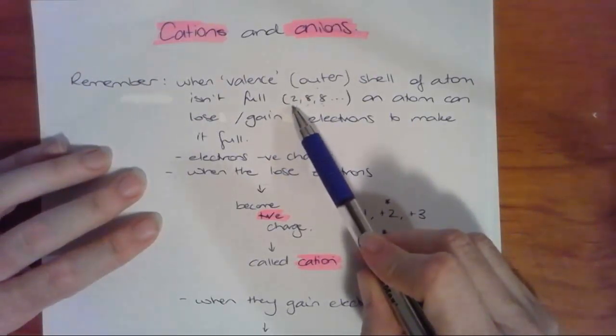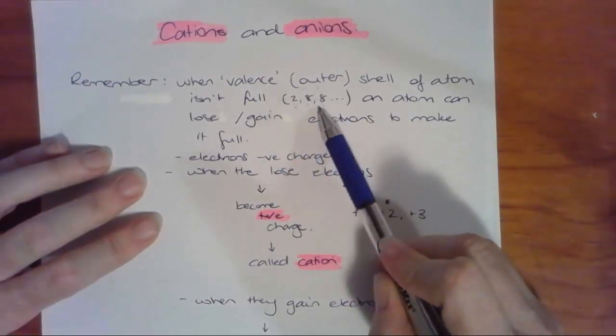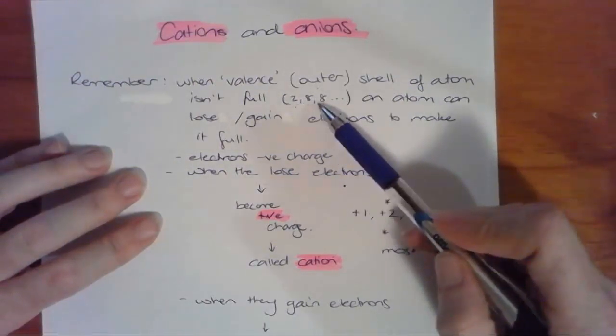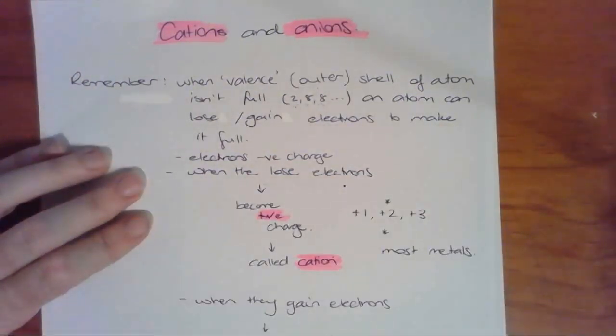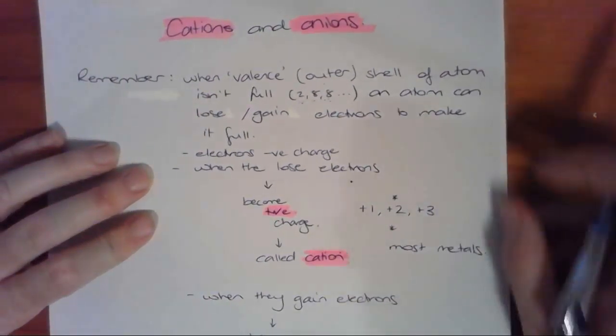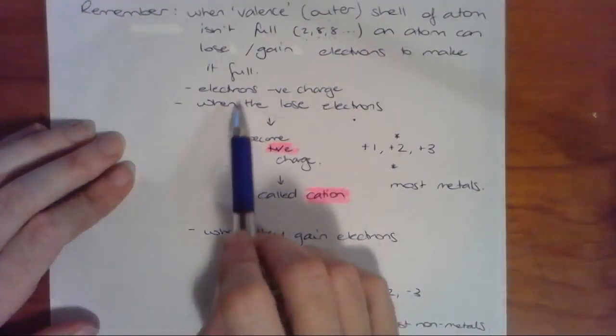I've written in brackets here 2-8-8 that represents the first shell of an atom has two electrons, the second shell has eight, the third shell has eight, etc. So that would be a full shell 2-8-8, but we know of course lots of atoms have varying amounts of electrons in different shells, but they do really like to have a full outer shell.